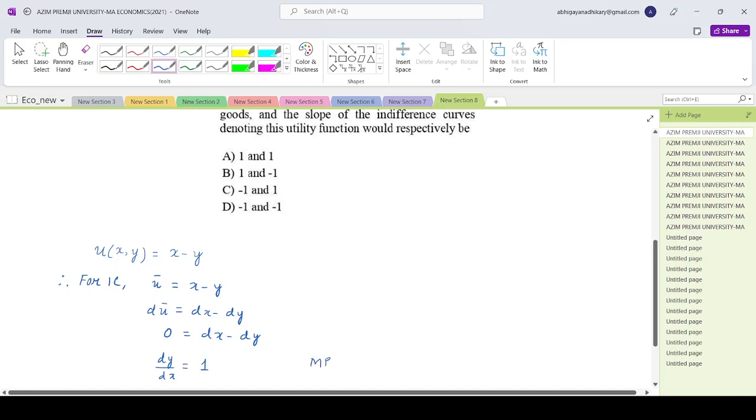And what is MRS? It is the absolute slope of the indifference curve, which in this case continues to be 1. So over here the option is part A. Both of them are 1.